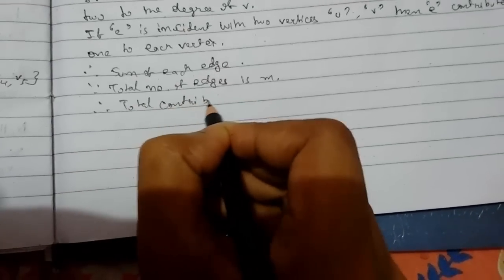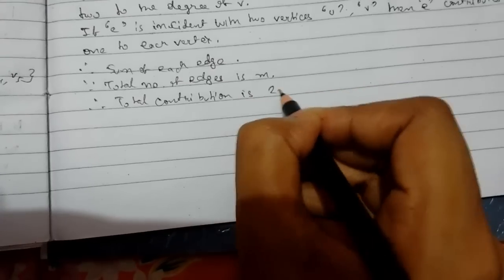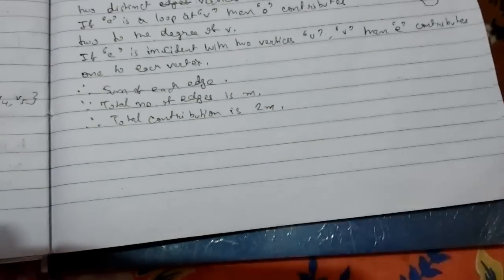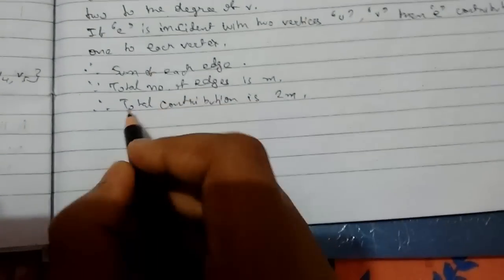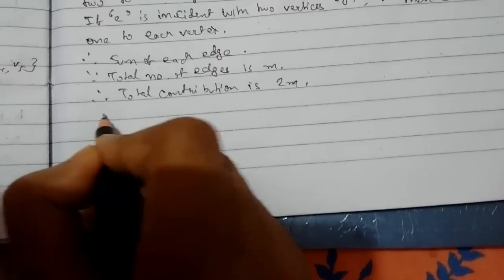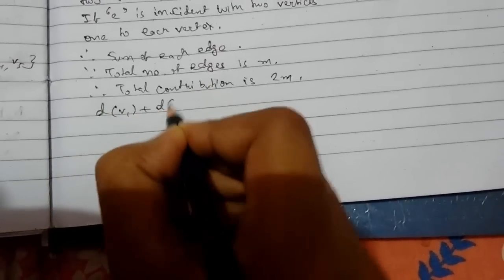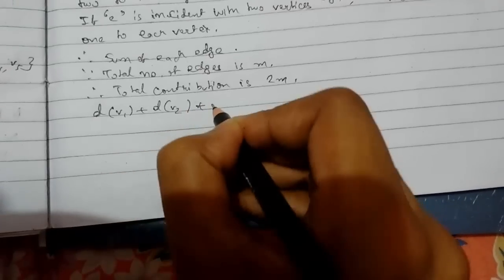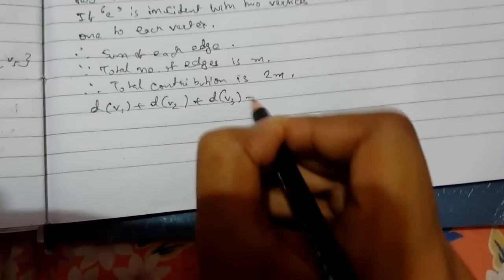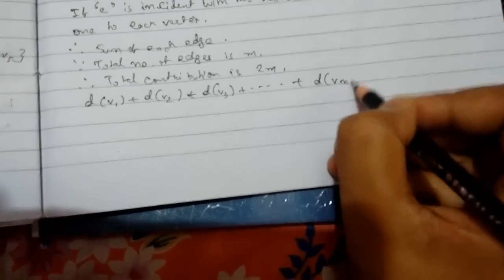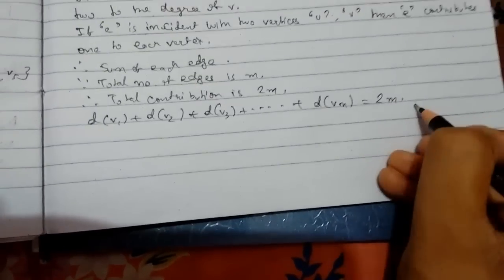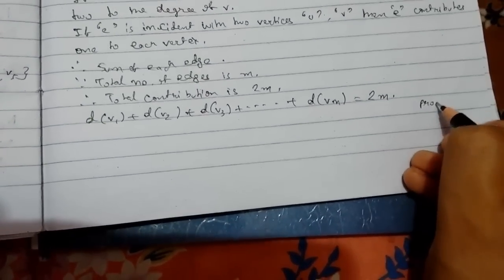So total contribution is 2. Therefore, thus we prove that the sum of degree of each vertex will contribute twice the number of edges. So this is our proof.